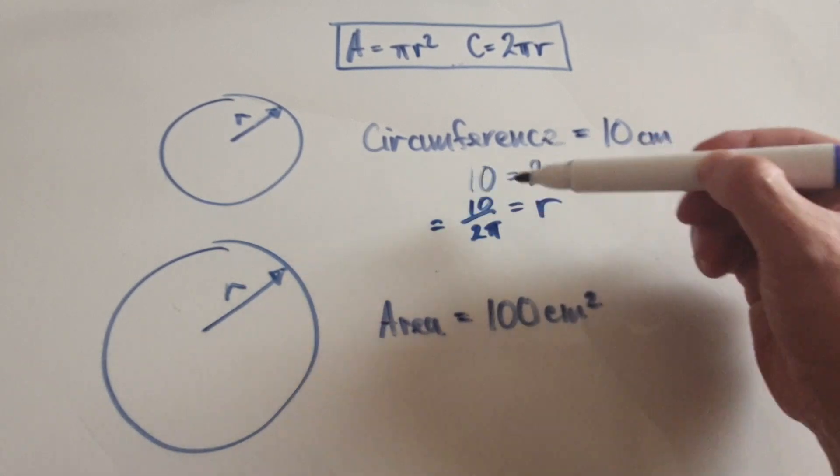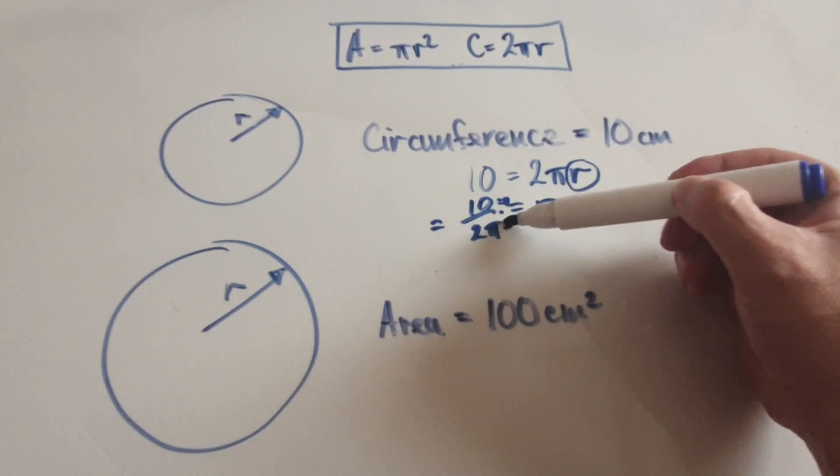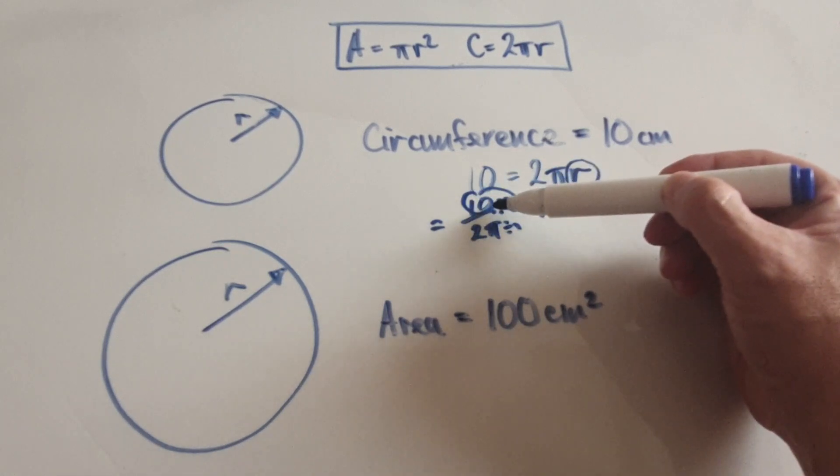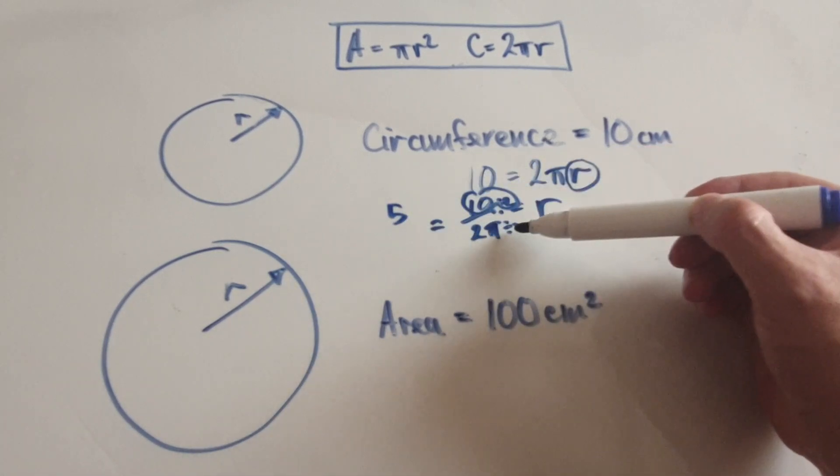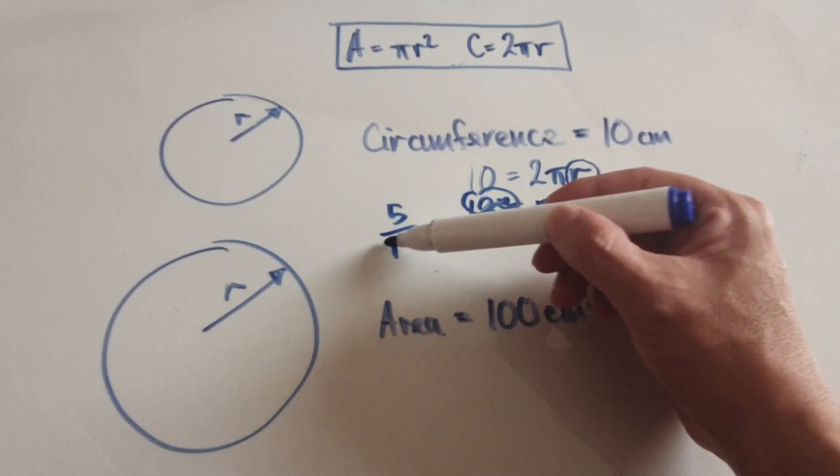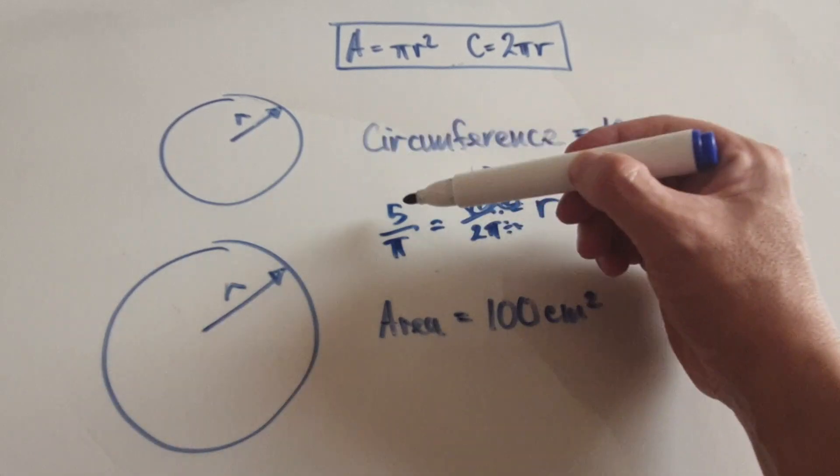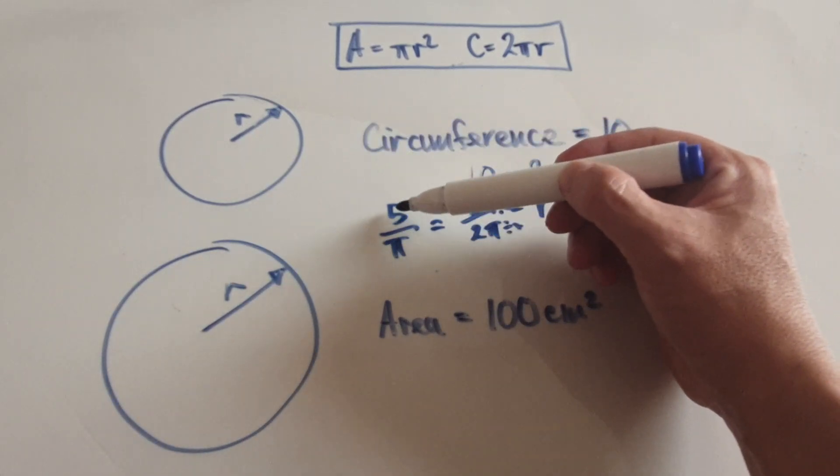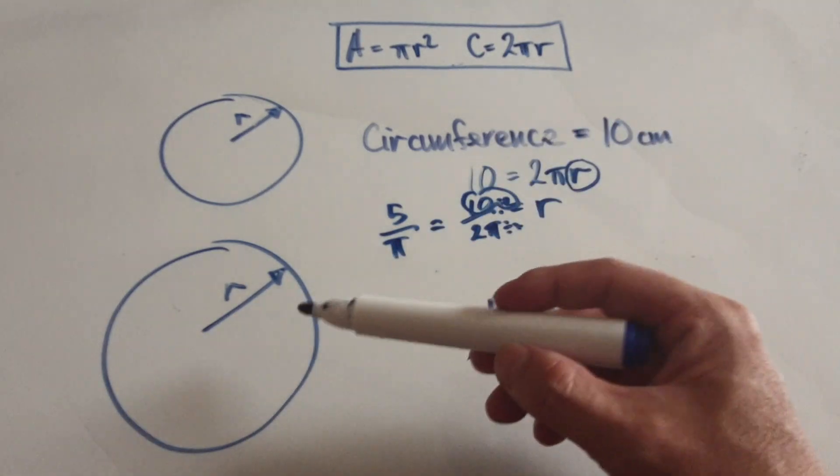You can simplify this. Divide top and bottom by 2, so 10 divided by 2 would be 5. 2π divided by 2 is π, so the radius is 5 over π.